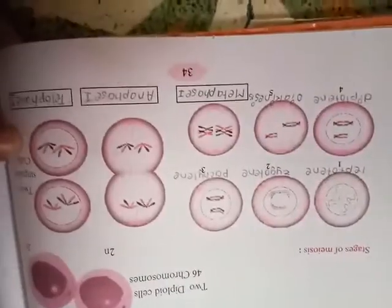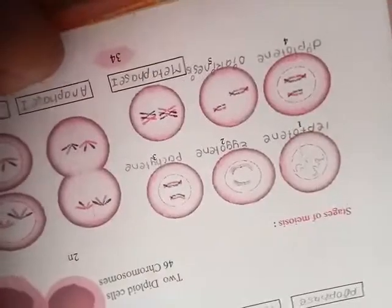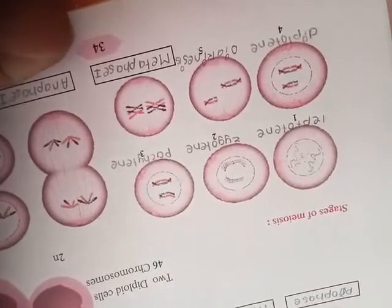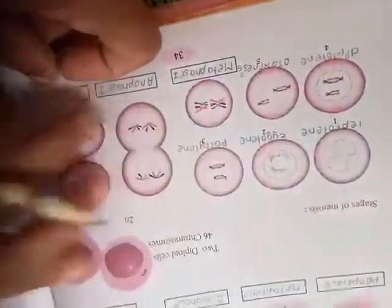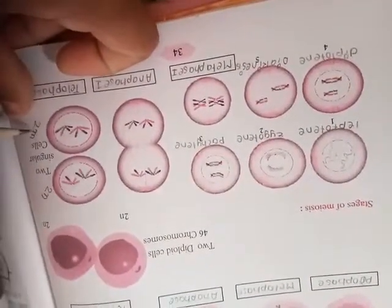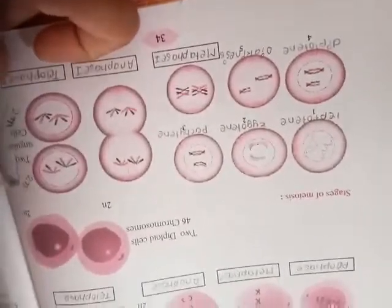But here two sister chromatids are also produced, two singular cells and these are 2n in number. First of all they are 2n in number, meaning from one parent you are getting two sets of cells with two sets of chromosomes.